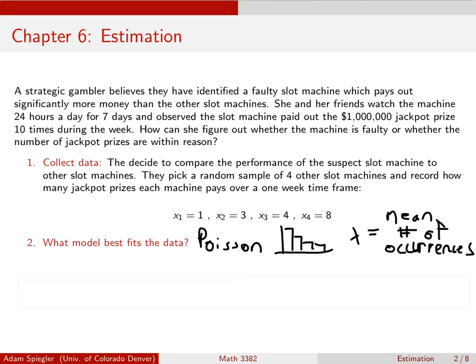We denote lambda as the mean or average number of occurrences in a fixed time period. It makes sense that this kind of bops down and down. Maybe our slot machines would follow this distribution because in order to pay out, a slot machine first pays out one, then it's going to pay out two jackpots and three jackpots.